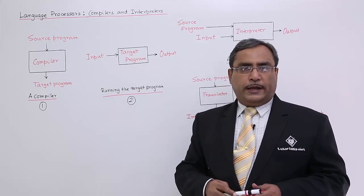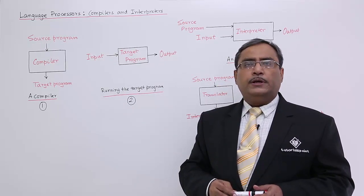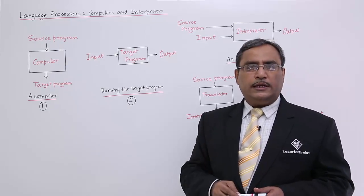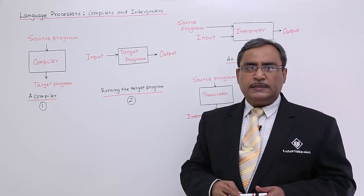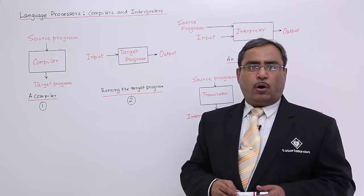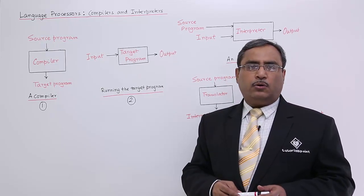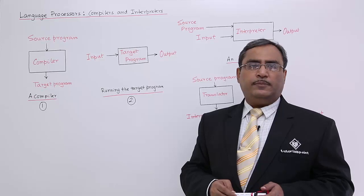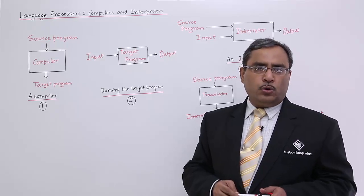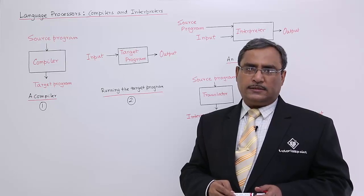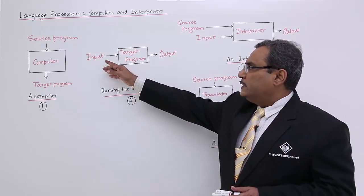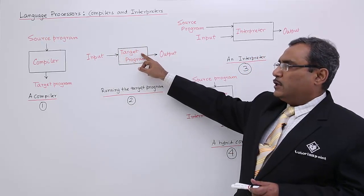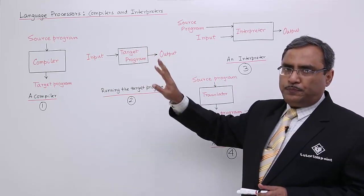Once the target program is obtained, the program will be asked for execution whenever required. When the program is executing, no translation is taking place. That means only during the translation process must the compiler and the source program coexist. But whenever the program is executing, in the system where it runs, there is no need to have the compiler's coexistence — we need not keep that compiler software present.